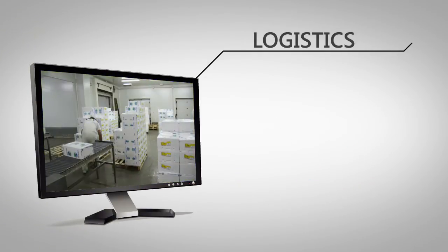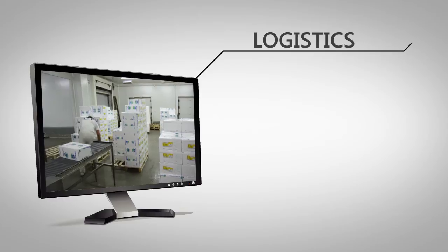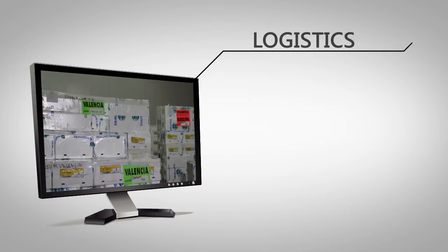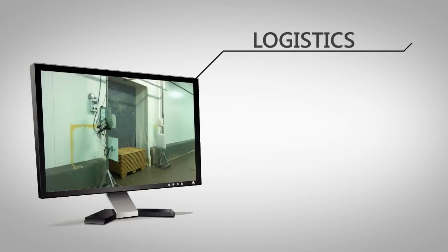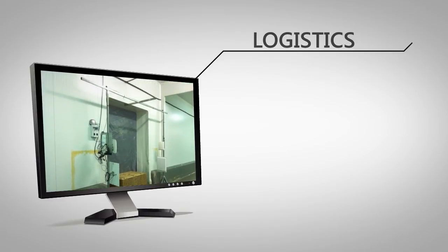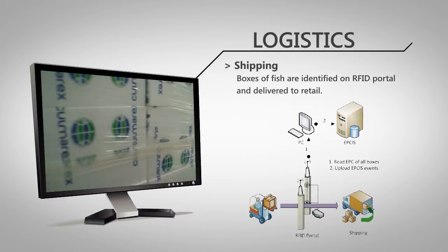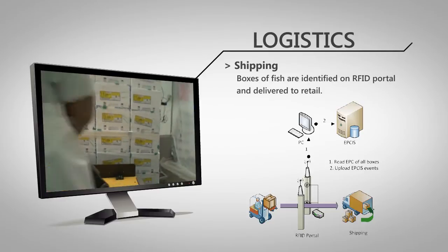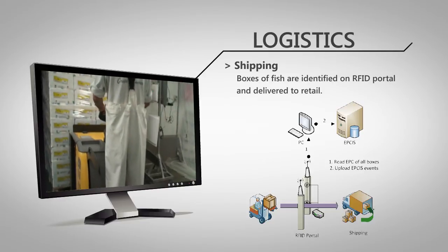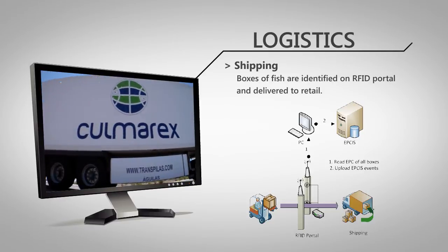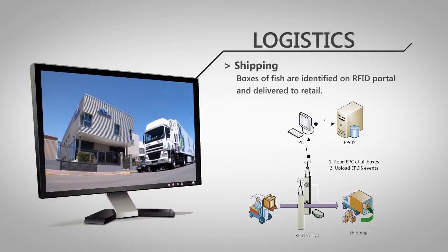Shipment of goods to clients. The operators in the warehouse take fish boxes according to purchase orders and put them in a pallet to completion. The pallet passes through an RFID portal that reads all the boxes within the pallet and controls if the number and type of boxes match with the order.